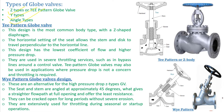The first is the T-type or T-pattern globe valve — this is the most common design, featuring a Z-shaped flow path. The flow goes in a Z shape from one end of the valve to the other. The horizontal setting of the seat allows the stem and disc to travel perpendicular to the horizontal line. When the handwheel is rotated, the stem and disc move up and down together.